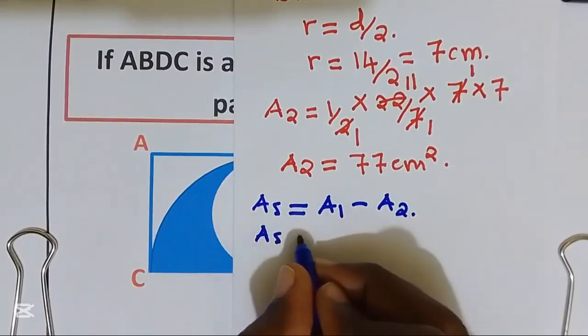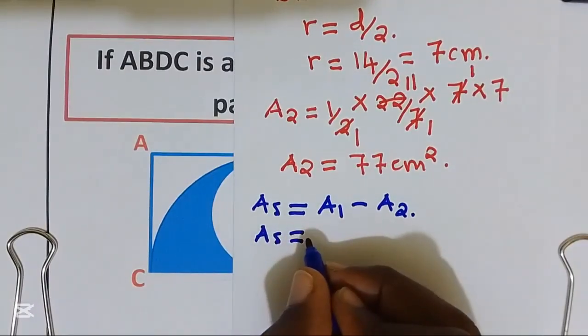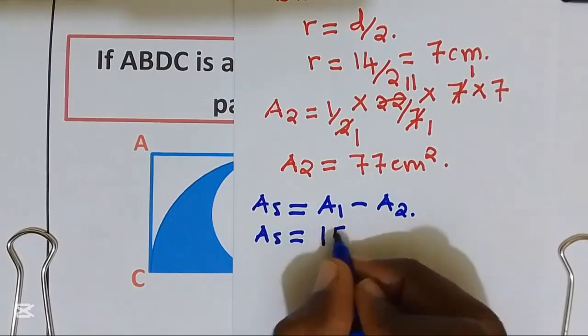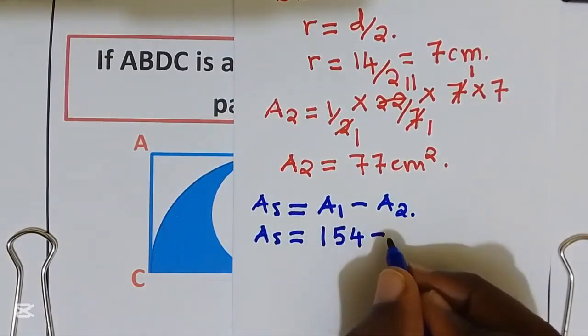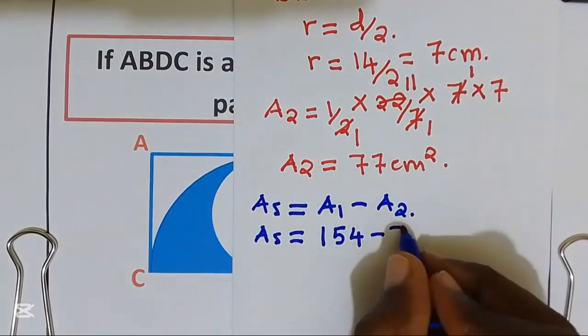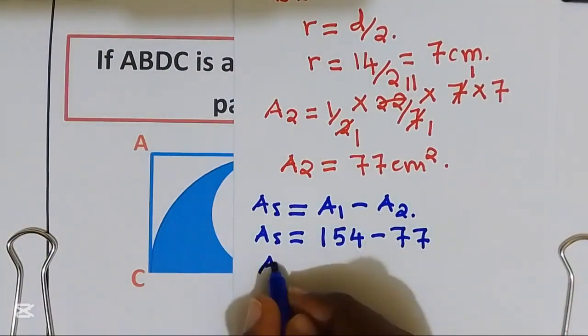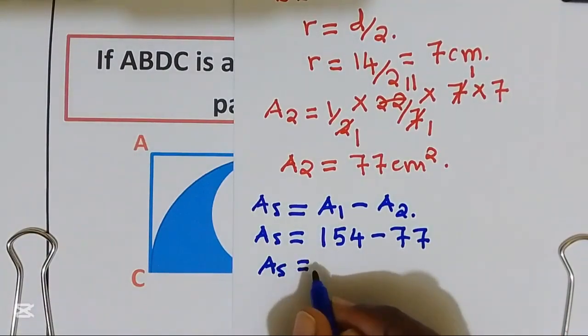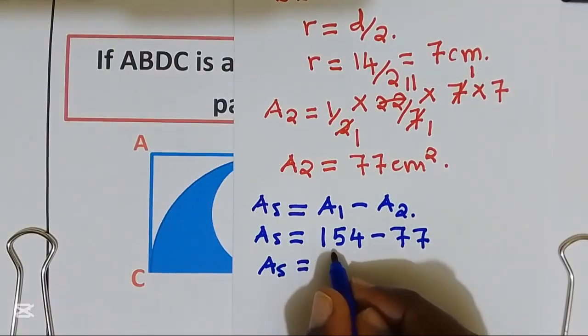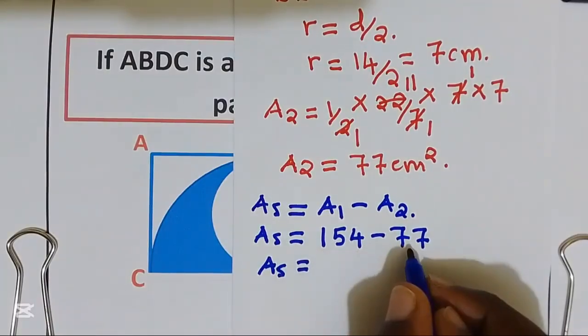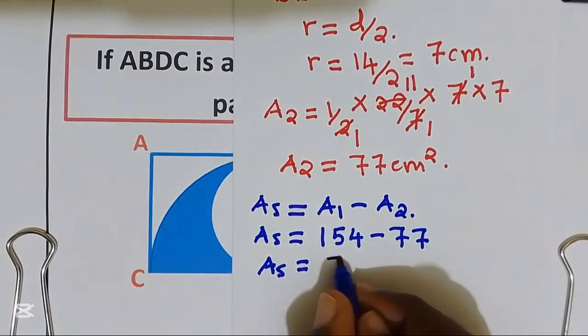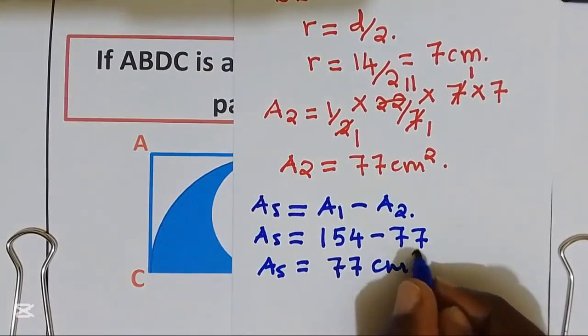Area painted blue is equal to area 1, we get 154, so 154 take away area 2, that we get 77. We are going to get area painted blue equal to 154, the area of quarter circle, take away 77, the area of our semi-circle, which is going to give us 77 cm squared.